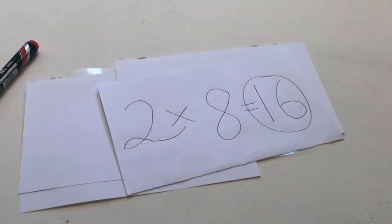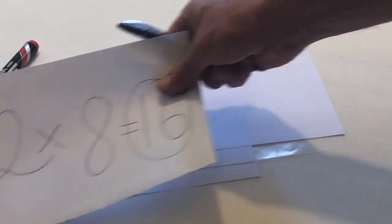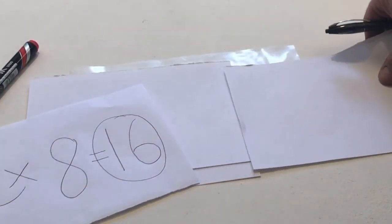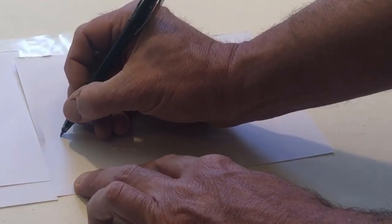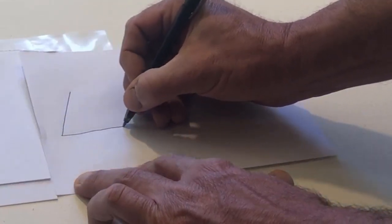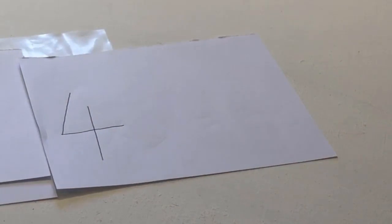Take another piece of paper. Write the number 4 on it. Next to the number 4, write the number 2.